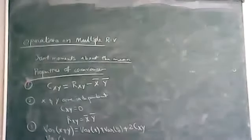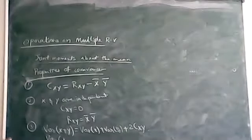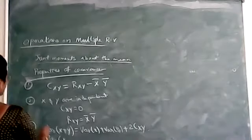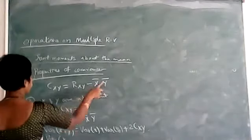So, we are discussing the properties of covariance. The first property of covariance is C(X,Y) is equal to R(X,Y) minus X bar Y bar.